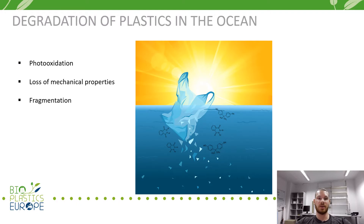Degradation of plastics in the ocean involves physical, chemical and biological processes and it is strongly dependent on environmental conditions such as temperature and oxygen availability. At the sea surface, solar ultraviolet radiation initiates plastic degradation. The plastic loses its mechanical properties and becomes susceptible to mechanical stress. The loss of mechanical strength of the material is enhanced when chemical additives such as softening agents or UV stabilizers leach out of the plastic.